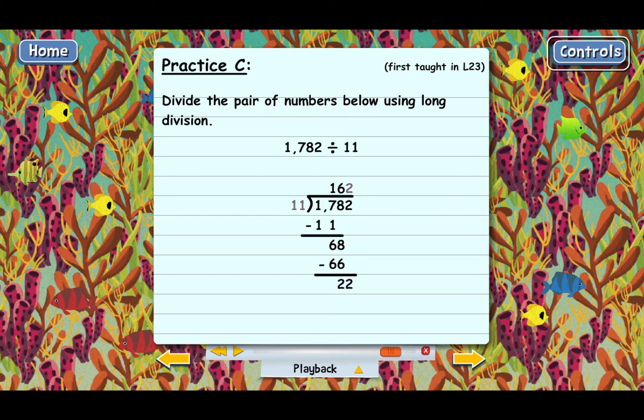And then 2 times 11 is 22. We put that down at the bottom. And then the last step is to subtract. 22 minus 22 is 0. So there's no remainder on this. And the answer to practice C is 162.